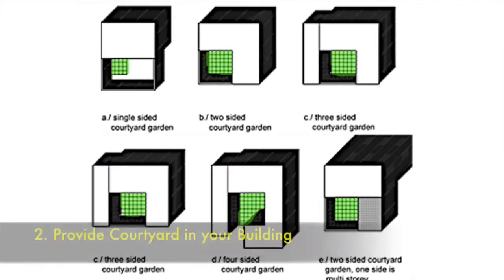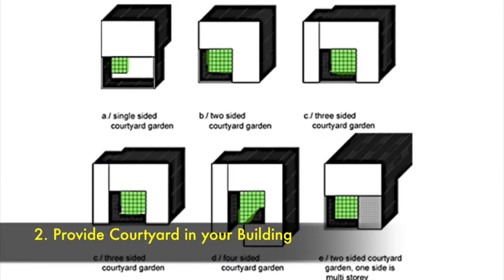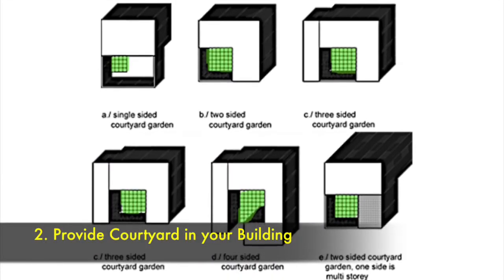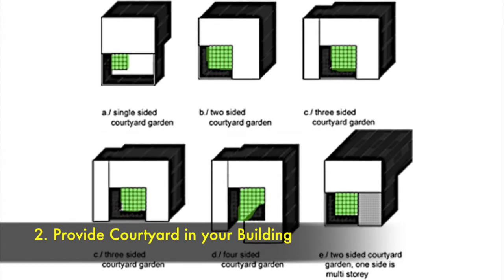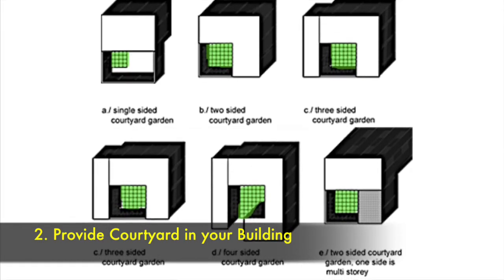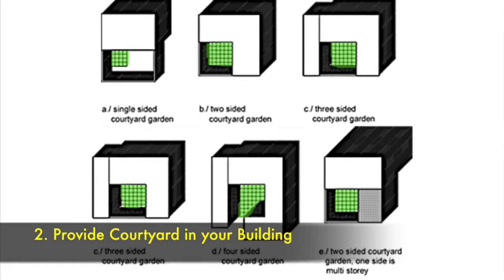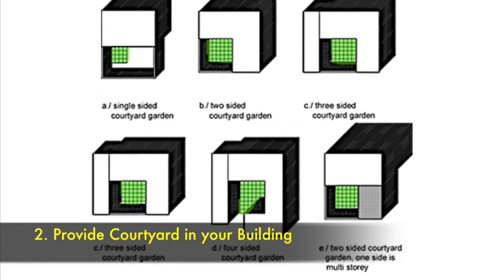The second one is provide a courtyard in your building, especially for this composite climate, because it maximizes the wind flow into the courtyard and enhances cross ventilation in the building.